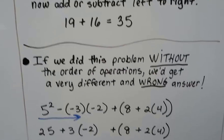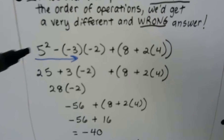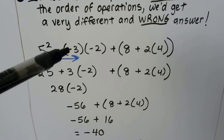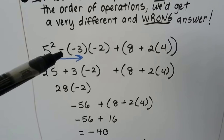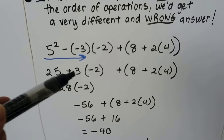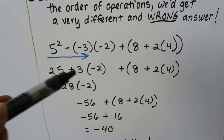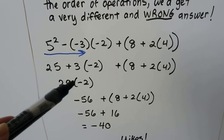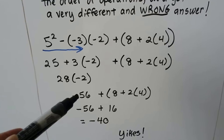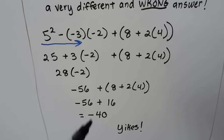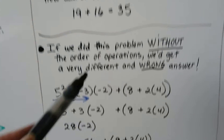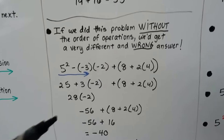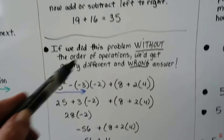Now if we did this problem without the order of operations, we'd get a very different and wrong answer. We'd get 25 for the 5 squared, then think we need to add the opposite of negative 3 and get 28 — that's wrong. Then we'd multiply 28 by negative 2 and get negative 56, ending up with negative 40. But the correct answer is 35: do the parentheses, then the exponent, then the multiplication, then add or subtract left to right.